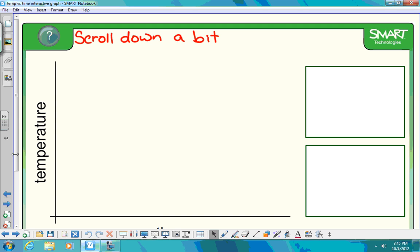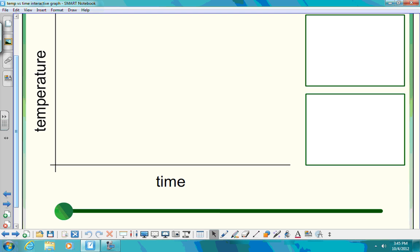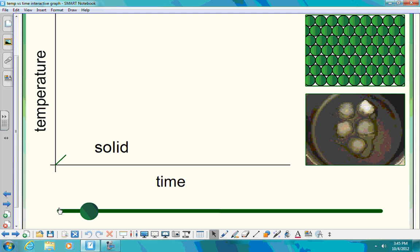Here we have our graph, and we have temperature going up the y-axis and time going across on the x-axis. So as we increase time and temperature at the same time, I want you to look on the right-hand side and see what's happening to our ice cube, and then watch the graph as it goes up. So as we start, we have solid molecules sitting in the pan at the bottom down here.